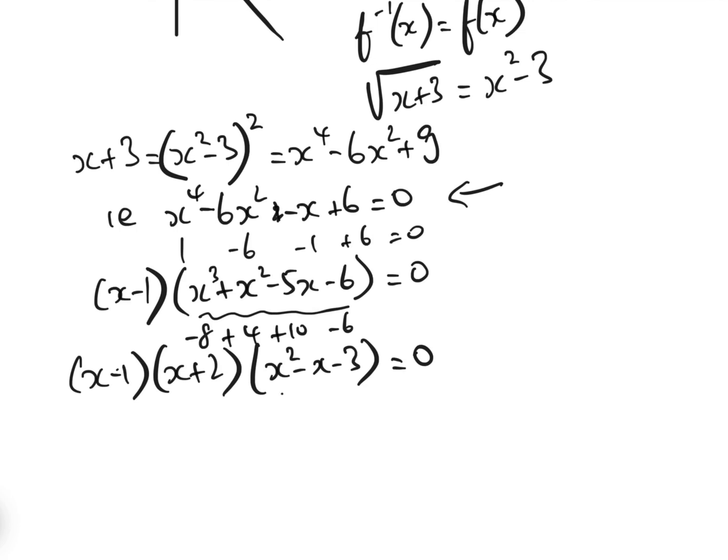And now to find the final two solutions, we can just solve this using the quadratic formula, i.e. x equals minus b, plus or minus the square root of b squared, minus 4ac, over 2, or 1 plus or minus root 13, over 2.